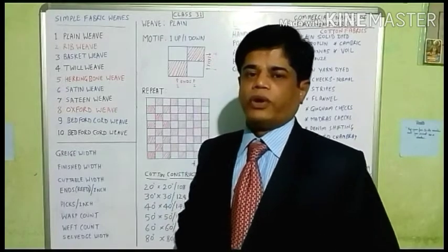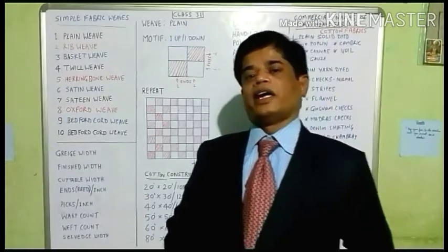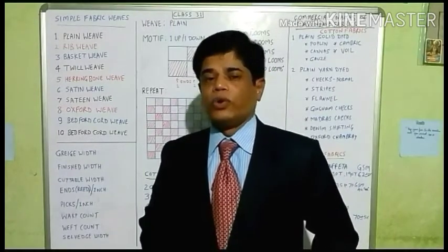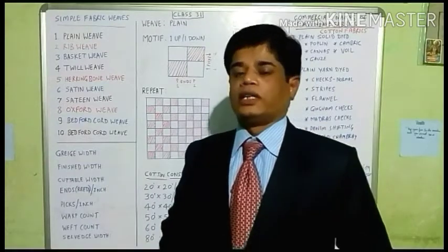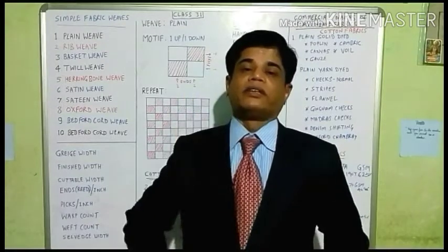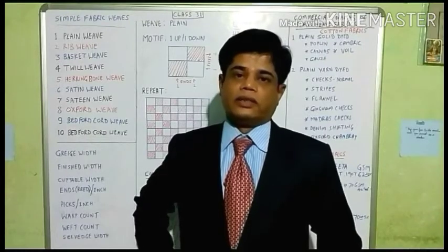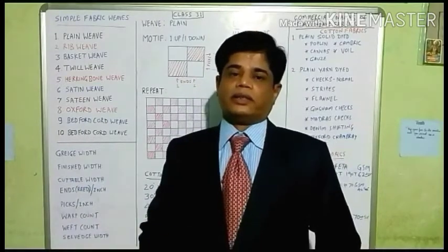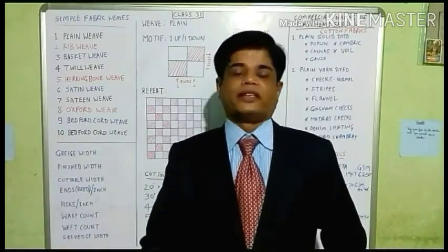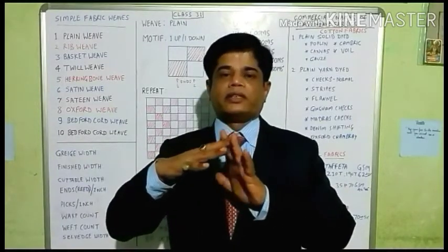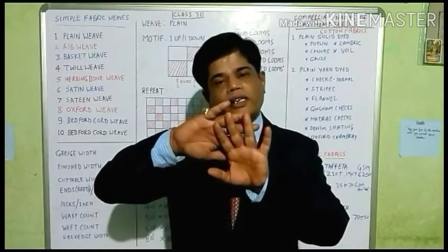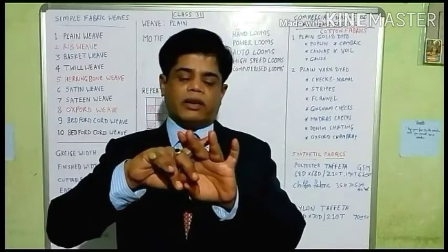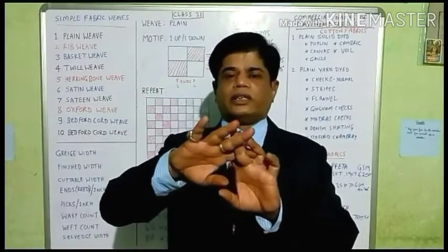The fabric is woven by the interlacement of warp threads and weft threads. The yarn threads floating along the longitudinal length of the fabric are called warp threads or ends. Whatever yarns are floating widthwise of a fabric are called weft yarn or picks. Both ends and picks are interlaced with each other, and only by this interlacement of warp and weft is the fabric constructed.